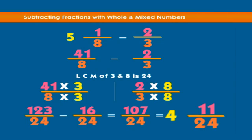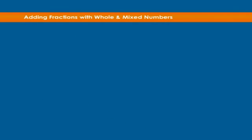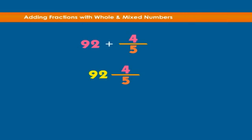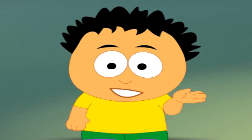Now let's look at an easy one. Example: 92 plus four-fifths equals how much? This is easy — to express this as a mixed number, just put the whole number and the fraction side by side. The answer is 92 and four-fifths.